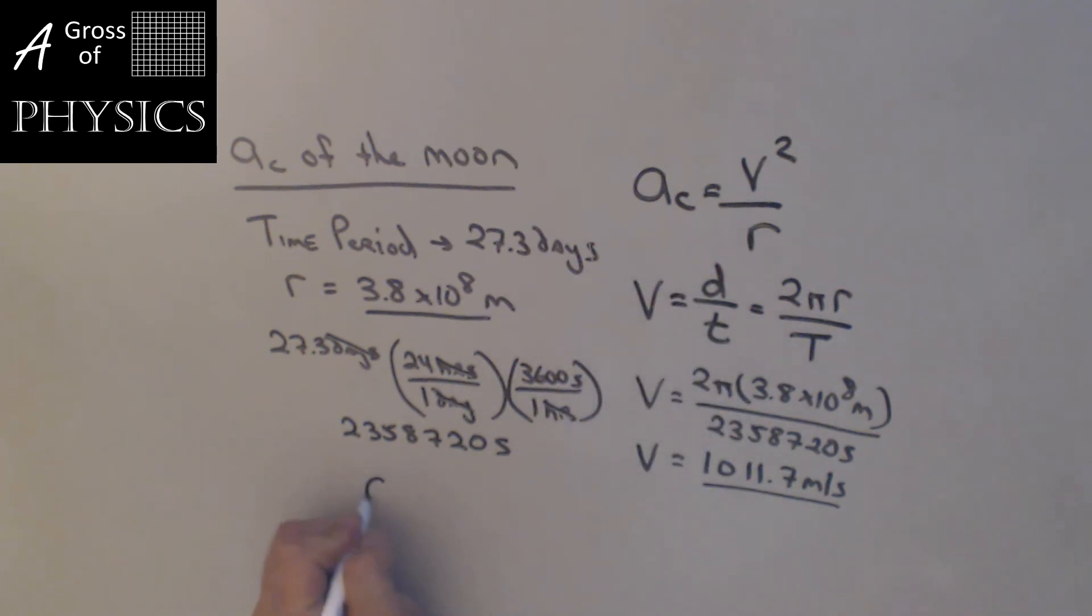We're going to take that v and plug it in for our centripetal acceleration equation. So 1011.7 meters per second, the whole thing squared. Watch out for the units. If you don't have the parentheses, it may look like an acceleration. And then divide it by 3.8 times 10 to the 8 meters. And when we do that, I already have the number in there, so I'm going to hit squared, and then divide by 3.8 EE8. And the centripetal acceleration of the moon is 0.0027 meters per second squared. Now what I'd probably write is 2.7123 times 10 to the negative third meters per second squared.